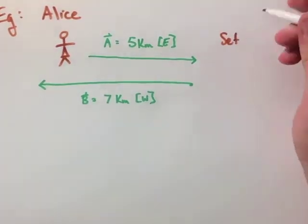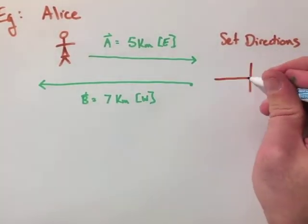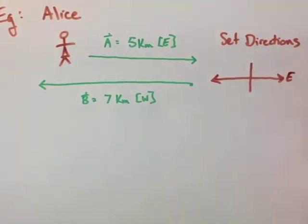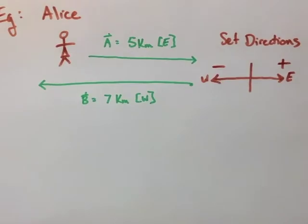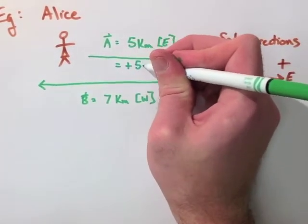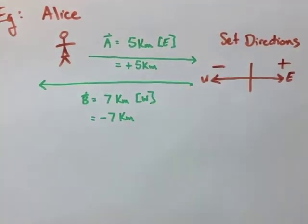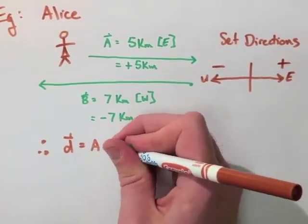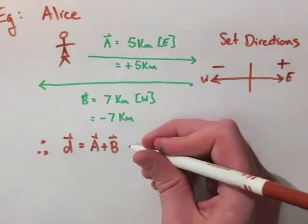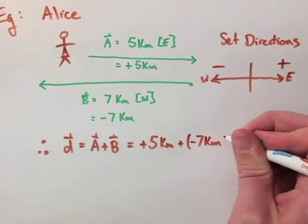Now, to solve a problem like this to find the final displacement, we have to set our directions, meaning we have to associate positive and negative with a direction. So let's make east positive and west negative. This way, we can make both of our numbers a positive and a negative. They're no longer east and west. Now when we look at this, we can just make our final displacement equal to A plus B, and then what that's going to be equal to is positive 5 plus negative 7.